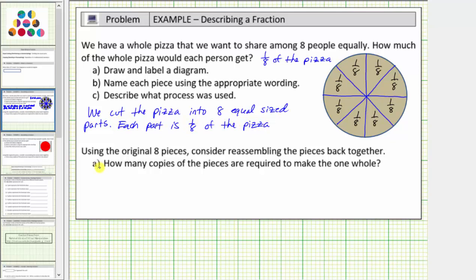Now for the last question, using the original eight pieces, consider reassembling the pieces back together. How many copies of the pieces are required to make the whole pizza? Well, because each piece is one-eighth of the pizza, it takes eight copies of the pieces, where each piece is one-eighth of the pizza, to make one whole pizza. So it takes eight copies of the pieces, which are one-eighth of the pizza, to make one whole pizza.